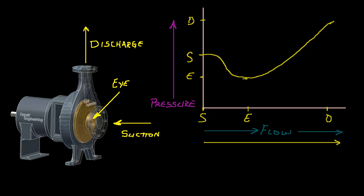Let's use this graph to see how the cavitation process works. Remember the vapor pressure line that we discussed earlier? Let's assume that the boiling pressure of the fluid happens to be at this particular pressure. In this example, cavitation should not be a concern, because the lowest pressure in the pump curve is higher than the boiling pressure of the fluid.